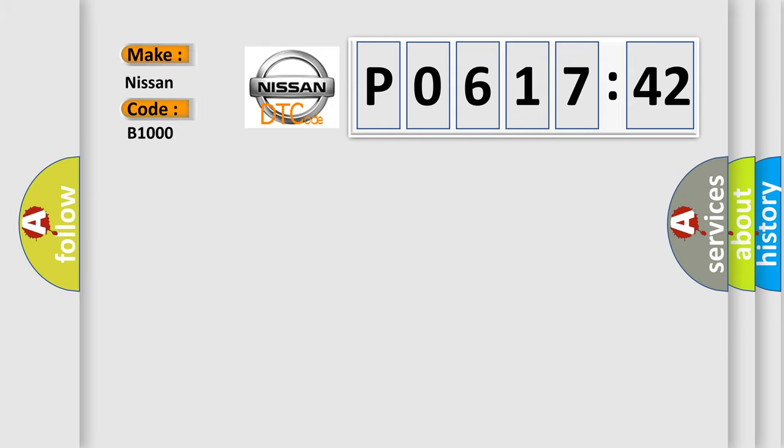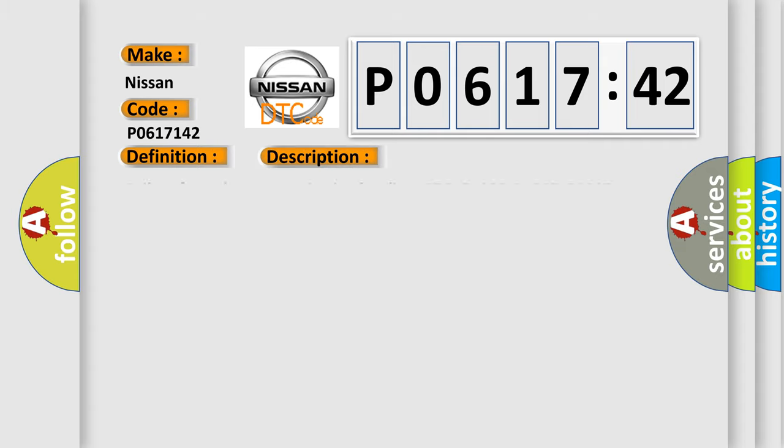PCI bus unable to communicate with DRBII scan tool. Fused ignition switch output. Incorrect off run start. Intermittent condition. PCM has failed. The Airbag Reset website aims to provide information in 52 languages. Thank you for your attention and stay tuned for the next video.